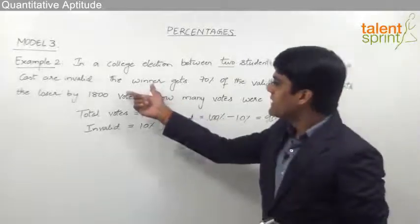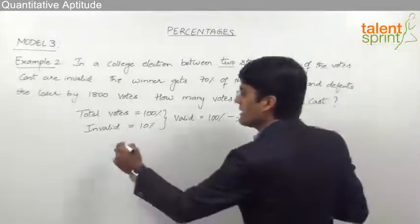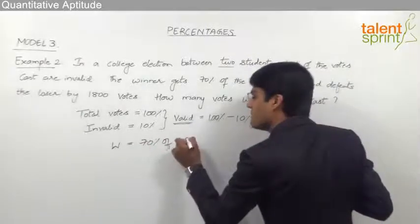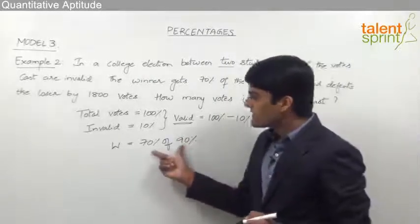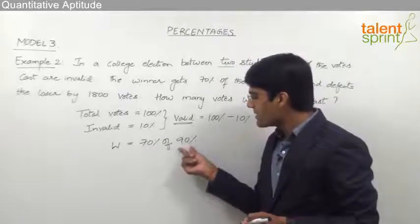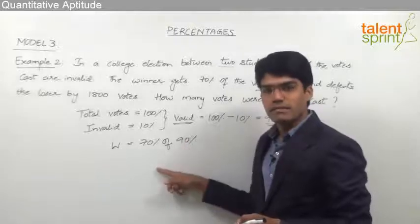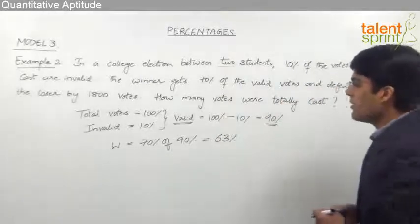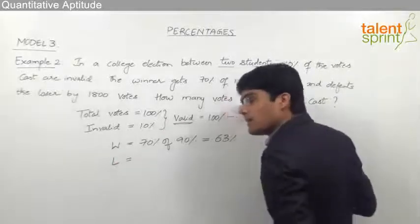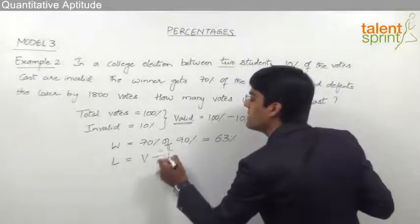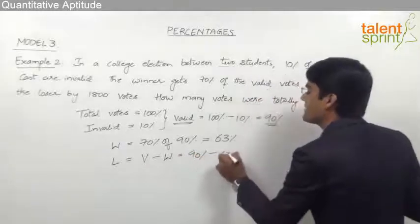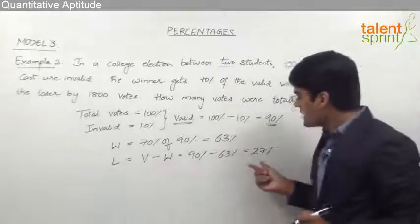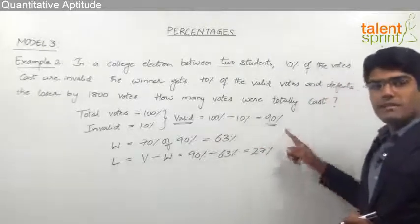The winner gets 70% of the valid votes, which is 90% of total. So the winner has got 70% of 90%. Using the concept of percentage of a percentage, 70% of 90% equals 70 × 90 ÷ 100, which is 63%. The loser's votes equal valid votes minus winner's votes: 90% minus 63% equals 27%. So winner got 63%, loser got 27%, and the remaining 10% were invalid votes.